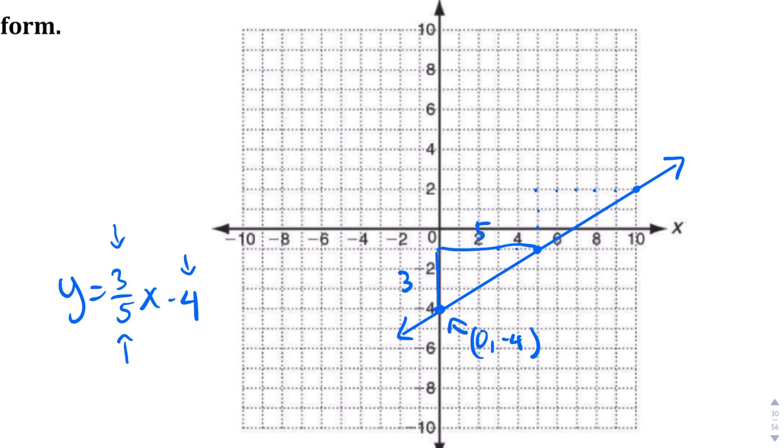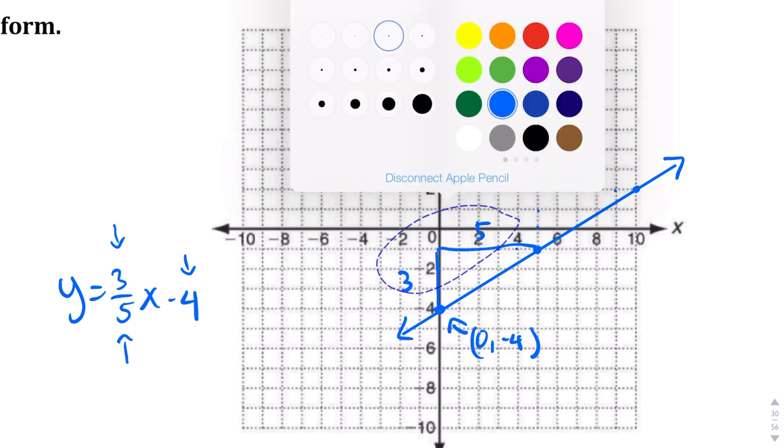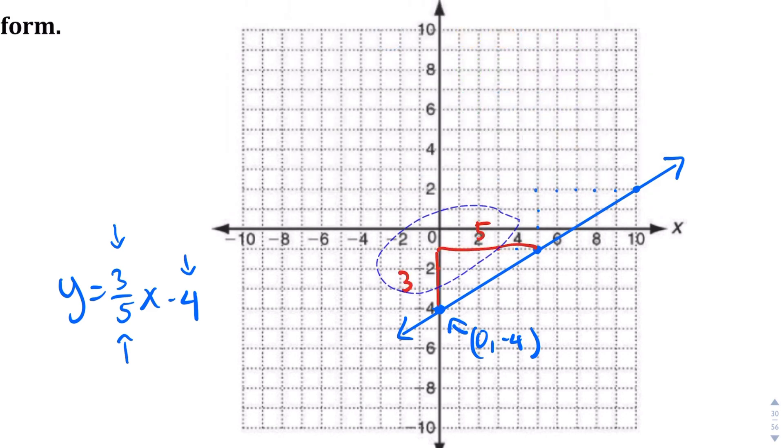That's a little hard to see, so let me actually change the color there. Let's make those red. As you can see, we go up 3 units and to the right 5 units. And then the same thing holds true when we went over, up 3 and over 5, as you can see.